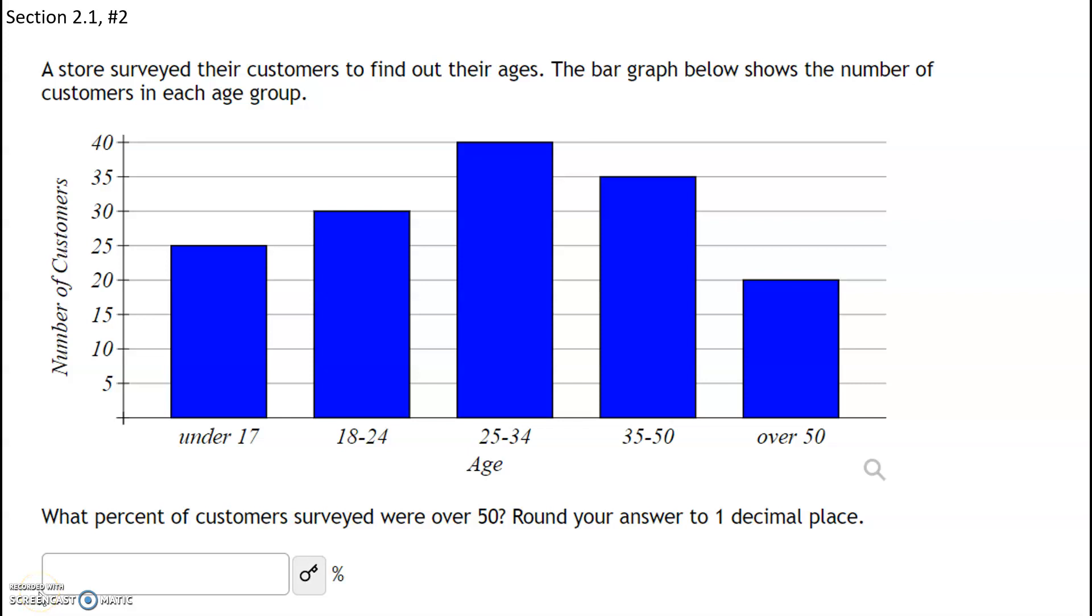A store surveyed their customers to find out their ages. The bar graph below shows the number of customers in each age group. So for example, in the under 17 age group there are 25 customers. So the first thing we're going to do is label each bar with its frequency.